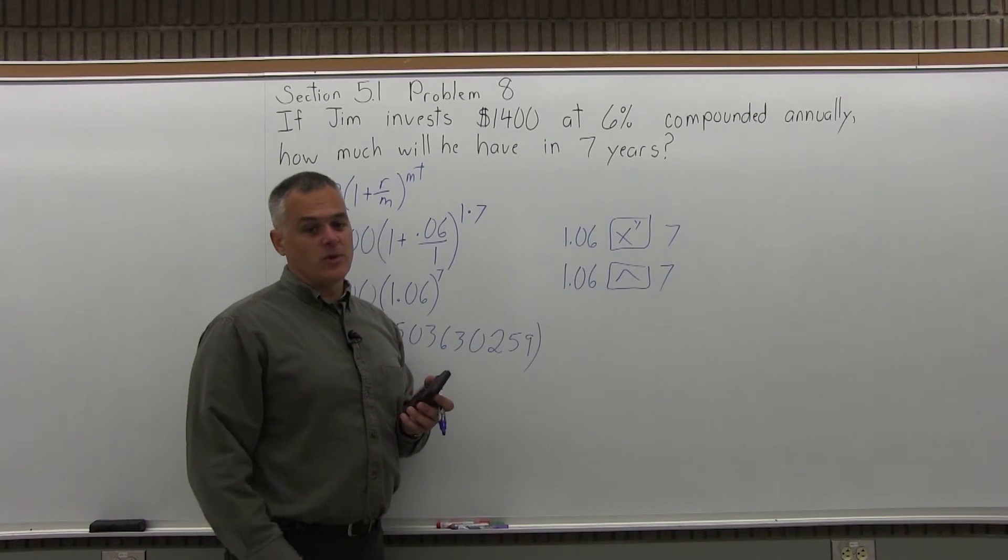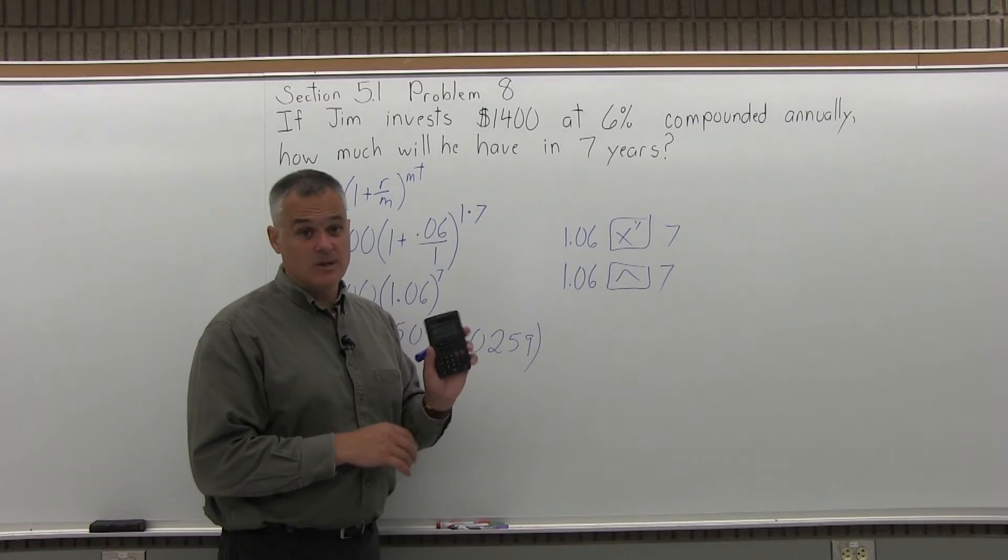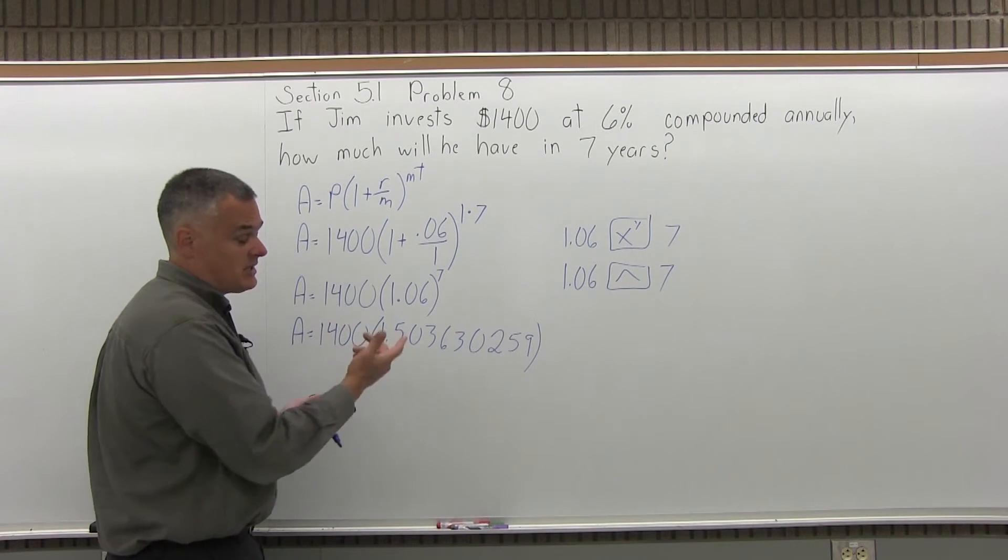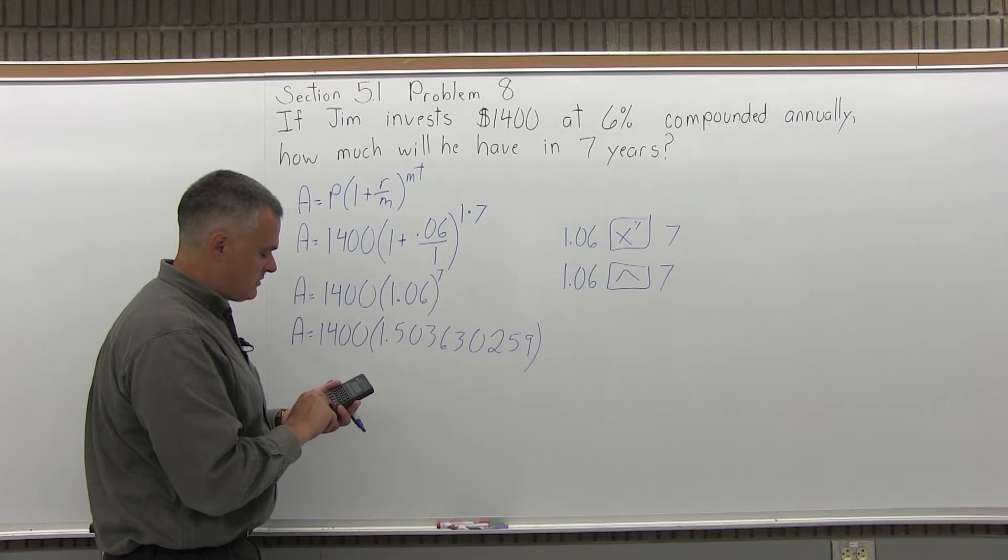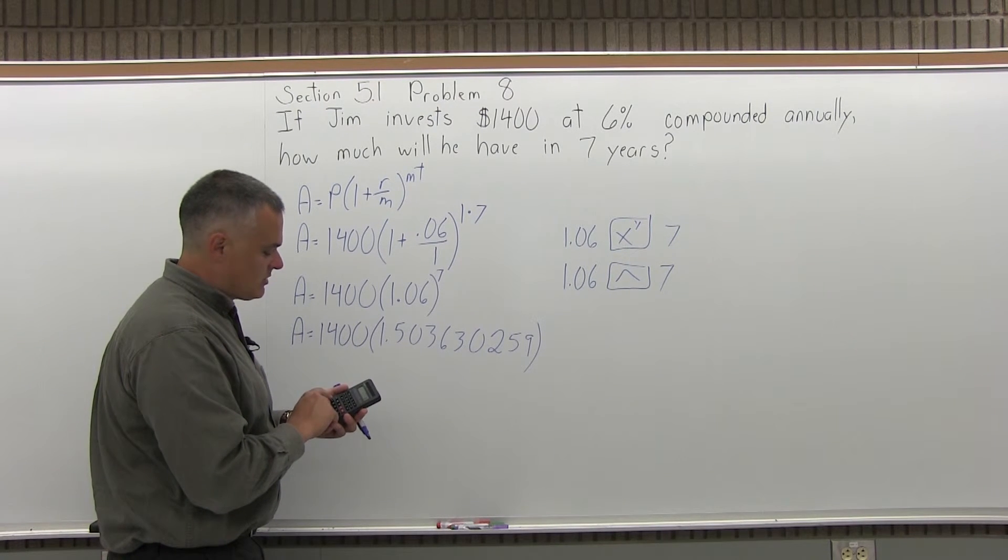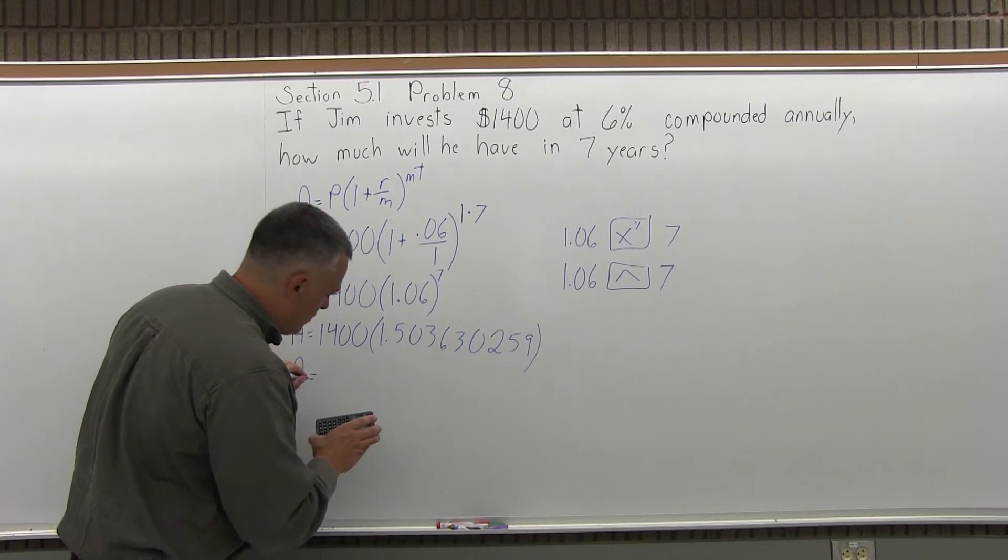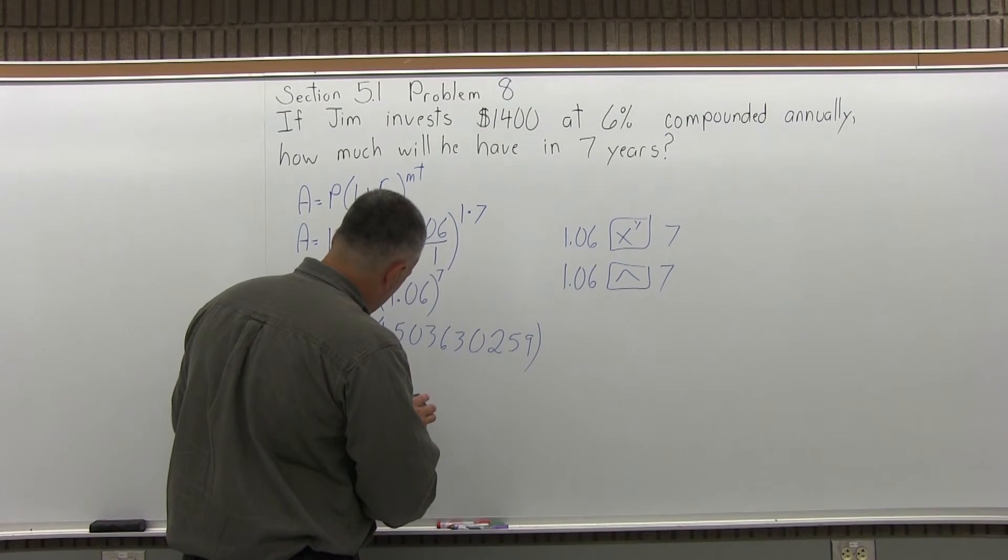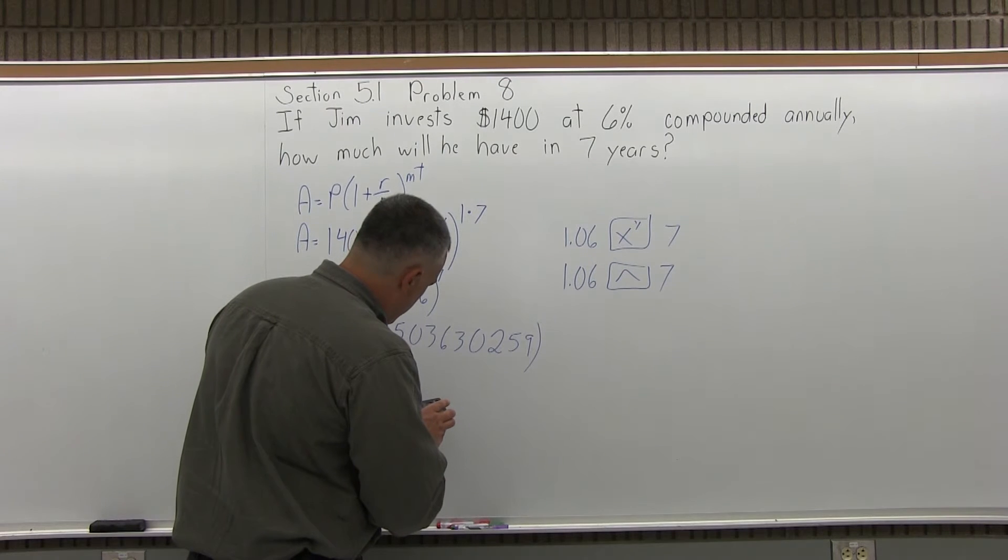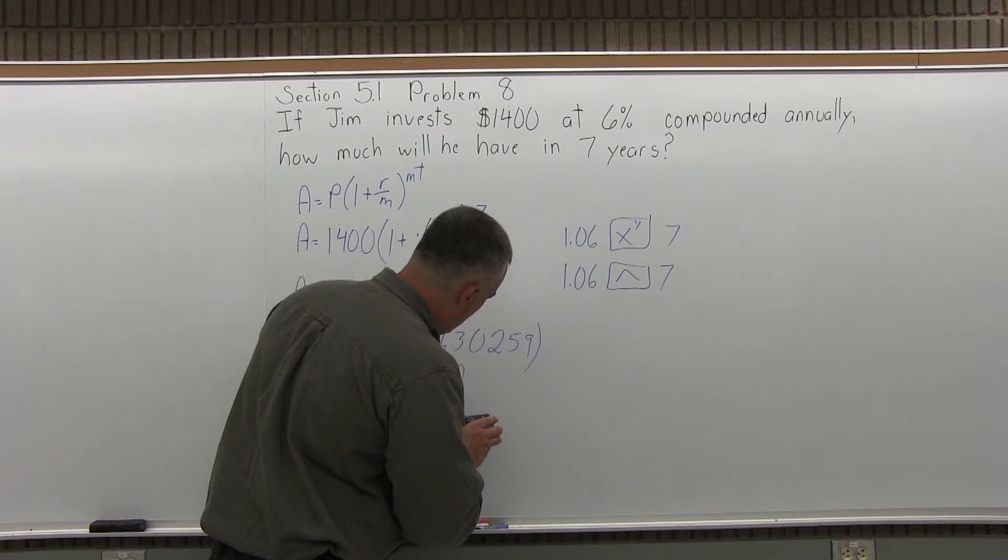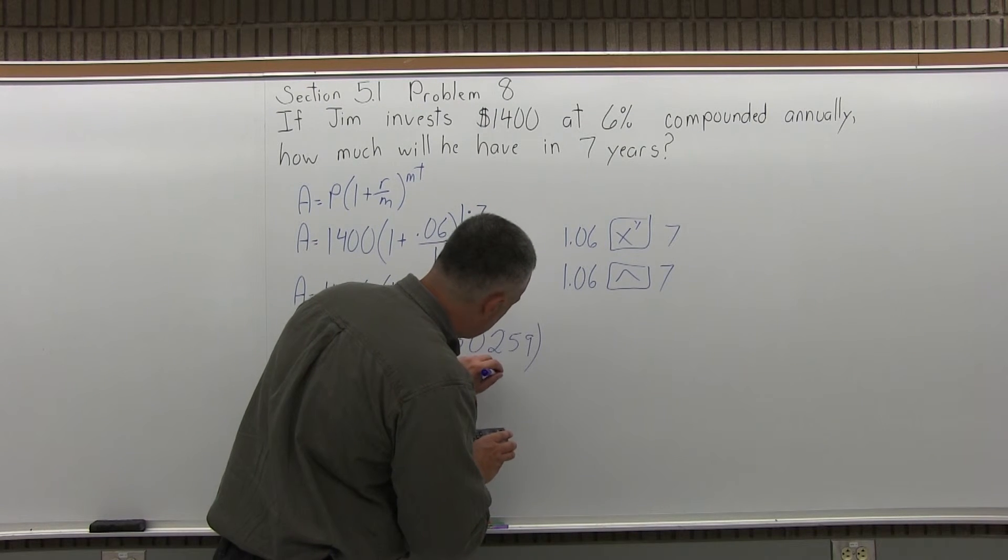The decimal value is on the screen of my calculator still. I'm just going to leave it there and do times 1,400. Why enter it again? There's no need for that. So the number on the screen times 1,400 equals, and I get an answer that A equals 2,105.082363.